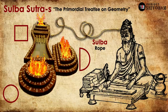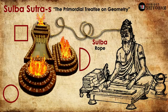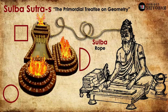Sulbhasutras are the primordial treatise on geometry, not just in Bharat but in the whole world. They detail all the geometric principles involved in constructing the fire altars of Grahapathya, Ahavaniya, and Dakshinagni — in the respective shapes of square, circle, and semicircle. The most distinct feature of ancient Indian geometry is that people used rope for all geometric constructions, which provided incredible flexibility no matter which shape they were dealing with. Sulbha means rope, hence the name Sulbhasutras — the principles of rope.